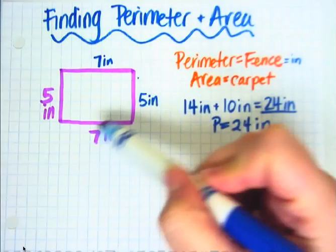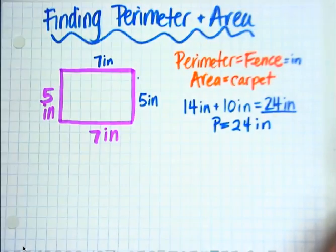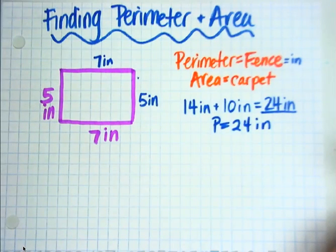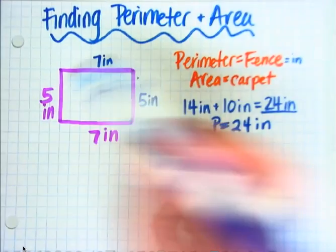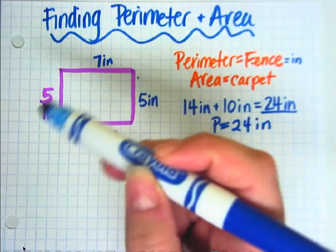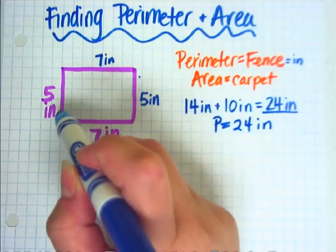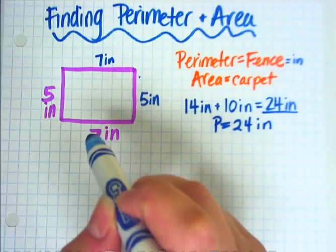Now, we're also asked to find the area of this rectangle. And there's two ways to find the area. The first way could take a long time, but some students like it because it's easier. You just take your pencil, or whatever you're using, and you make dots in each square as you count.